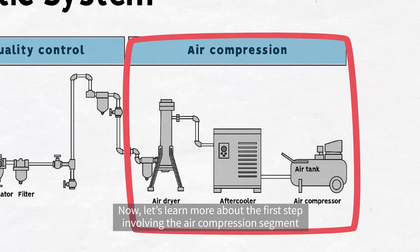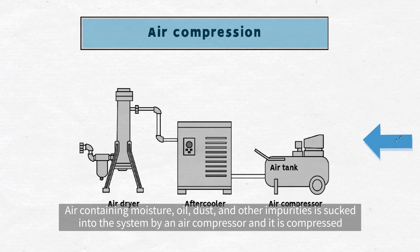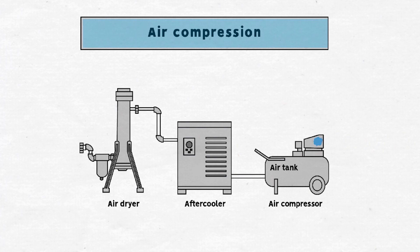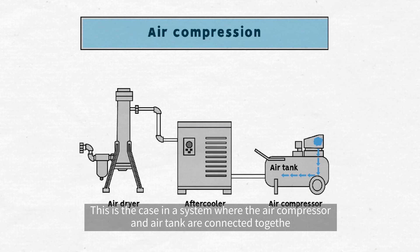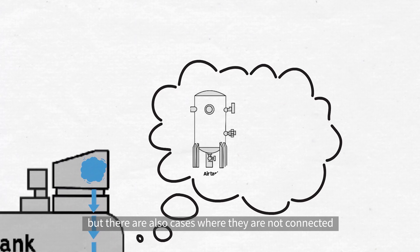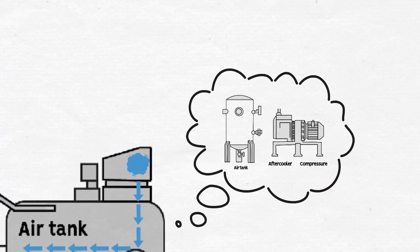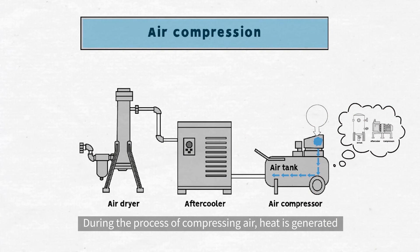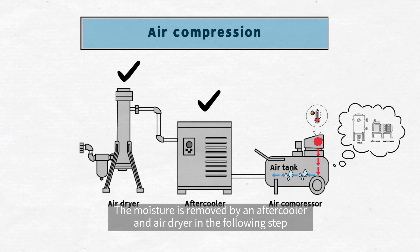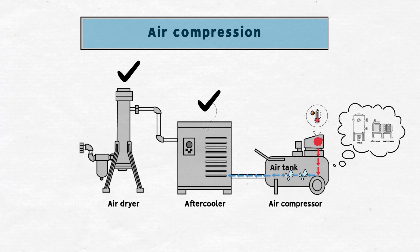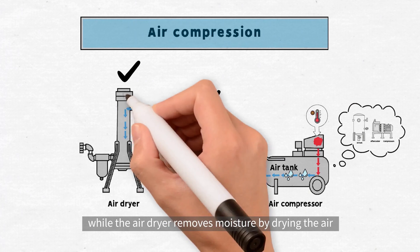Now let's learn more about the first step involving the air compression segment. Air containing moisture, oil, dust and other impurities is sucked into the system by an air compressor and it is compressed. The compressed air then enters an air tank where it is stored. This is the case in a system where the air compressor and air tank are connected together, but there are also cases where they are not connected. During the process of compressing air, heat is generated. As the heat is conveyed through a pipe, it cools down and this creates moisture in the air. The moisture is removed by an after cooler and air dryer in the following step. The after cooler removes moisture by cooling the air, while the air dryer removes moisture by drying the air.